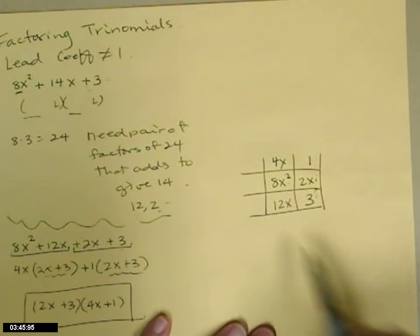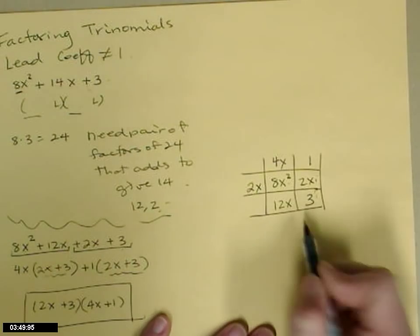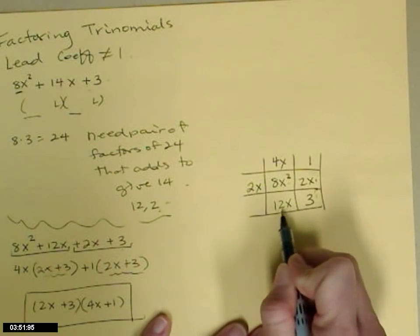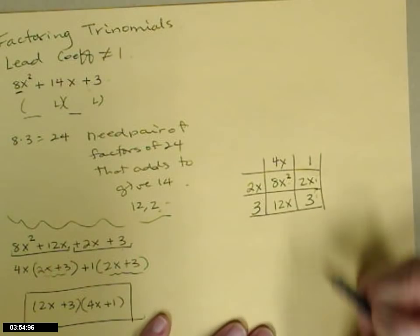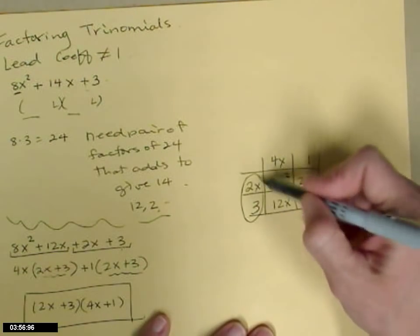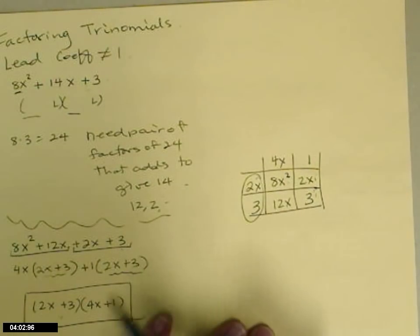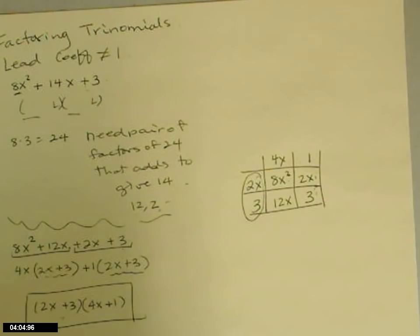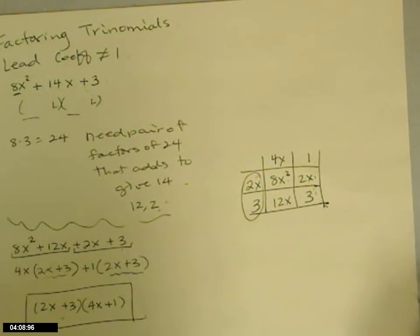Now going across: 2x and 8x squared have a GCF of 2x; 3 and 12x have a GCF of 3. Since all terms are positive, all signs are positive. You can read off 2x plus 3 and 4x plus 1 directly from the table. This is a handy trick — if factor by grouping gets you in trouble, try using this little table to keep yourself straight.